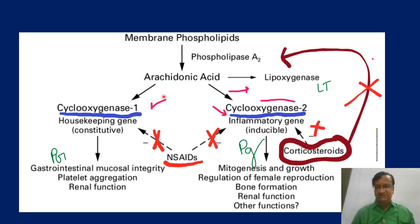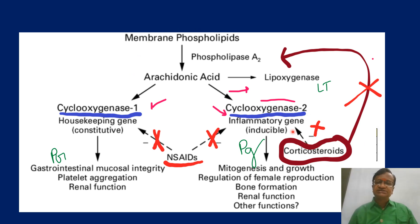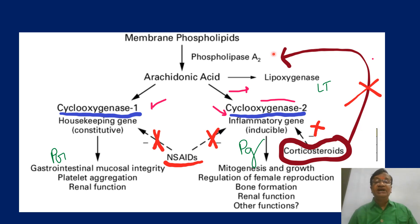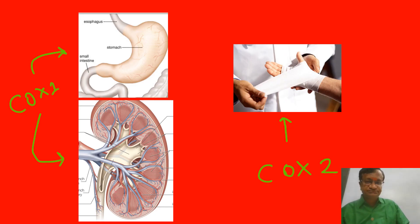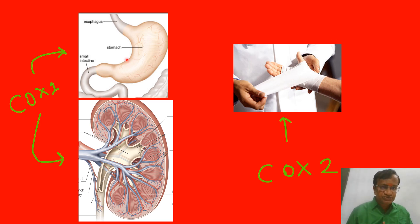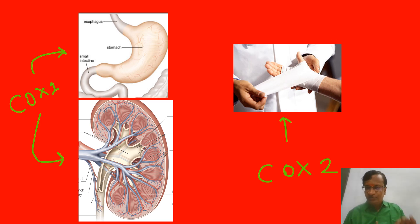Steroids can inhibit phospholipase A2, so there is no arachidonic acid released from the membrane in the first place. That is the advantage of steroids as an analgesic. COX-1 is constitutively present and COX-2 is induced upon injury.